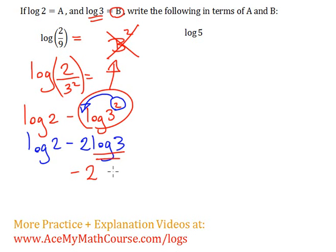We need to bring the 2 down and say that log 3 is equal to B. So I can say that we have minus 2B, and log 2 is just A, so we have A minus 2B.